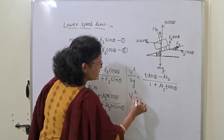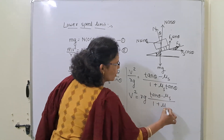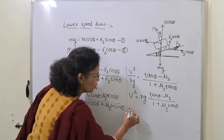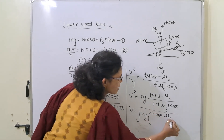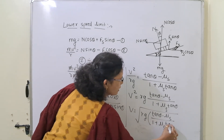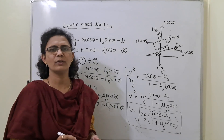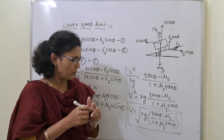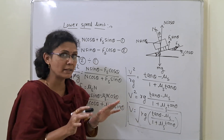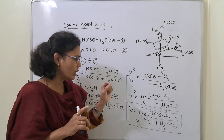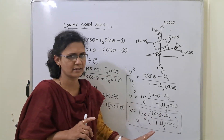Therefore, v squared equals rg × (tanθ − μs) / (1 + μs tanθ), and the lower speed limit is: v = √[ rg × (tanθ − μs) / (1 + μs tanθ) ]. This is the expression for the lower speed limit — the vehicle must not travel below this speed on a banked road.